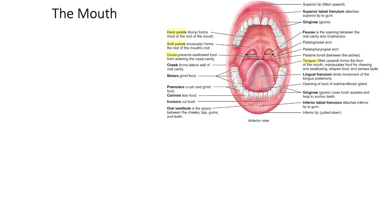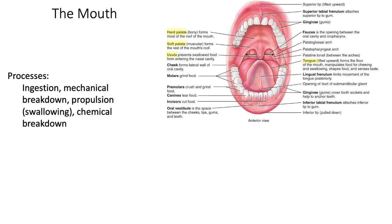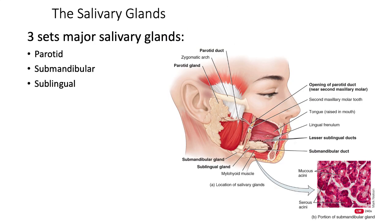Starting at the oral cavity, we have several processes: ingestion, mechanical digestion, chemical digestion, and propulsion in the form of swallowing. The teeth are accessory organs, and the salivary glands are also accessory organs found in the mouth. There are three sets of major salivary glands, plus minor glands that secrete directly into the mouth. The parotid are in front of the ear, the submandibular are below the mandible, and the sublingual are below the tongue. All three produce a watery fluid containing varying amounts of salivary amylase, which digests starch; lingual lipase, which starts the digestion of fats and oils; as well as water, mucus, chloride ions, and lysozyme.